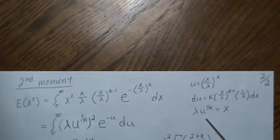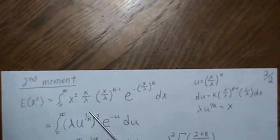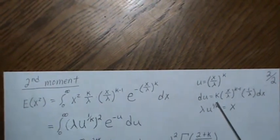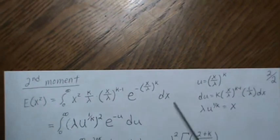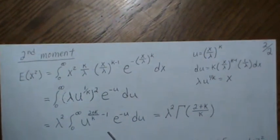So for here we put that there, it's lambda u to the 1 over k squared. So that's this piece. Then the dx, all this is formed with dx, just becomes du, and that's u. So we're left with this.